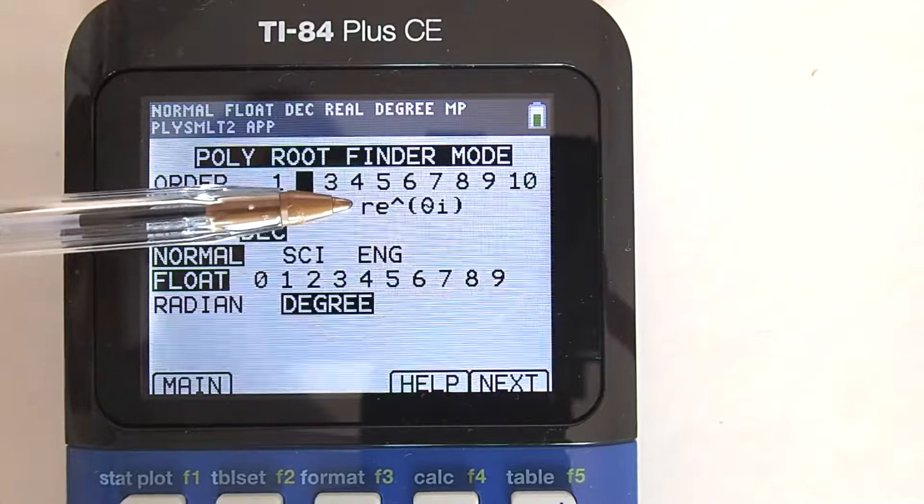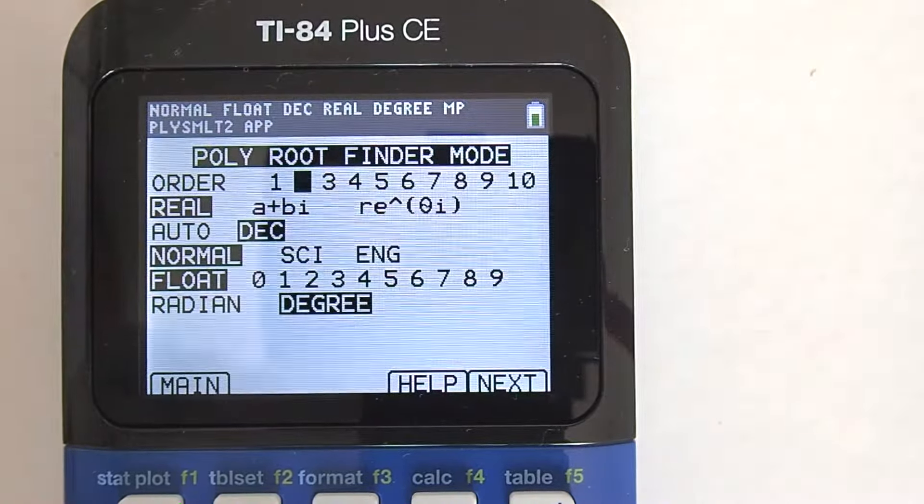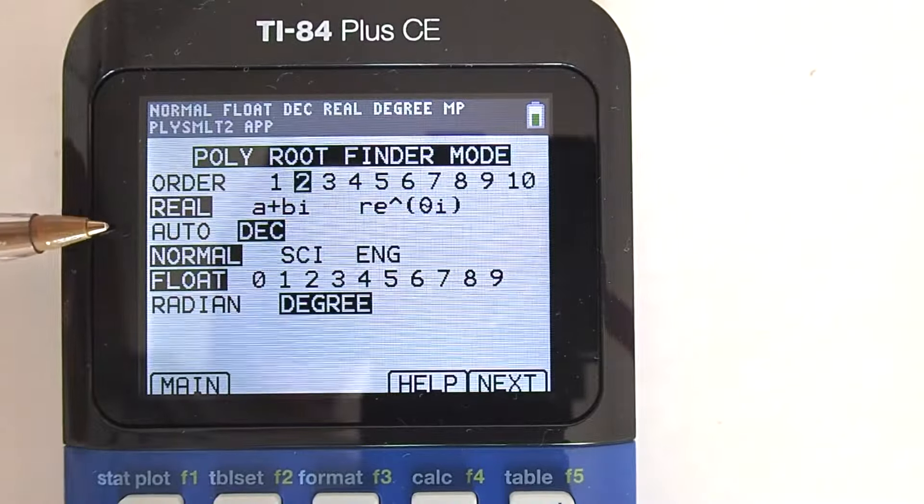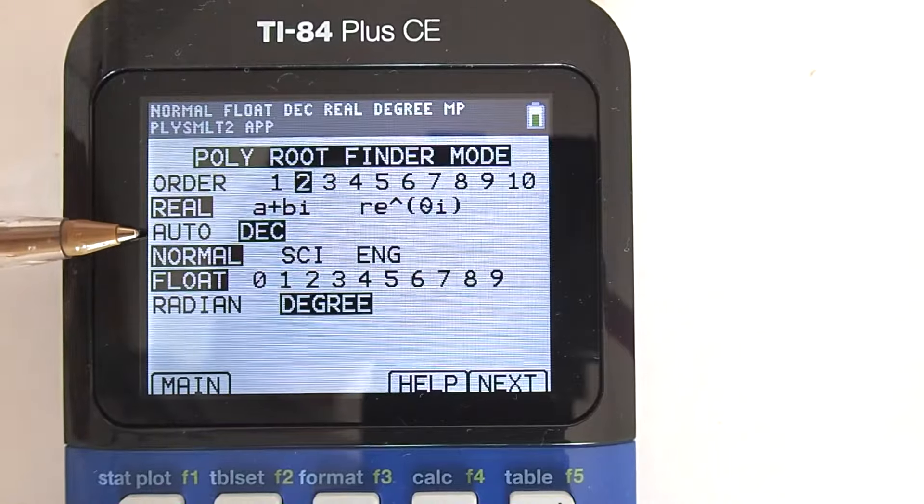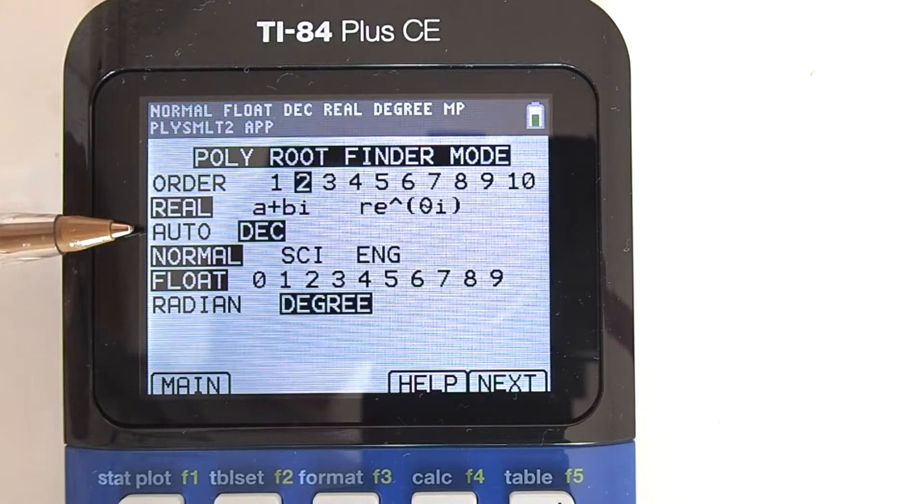To the right of the complex number symbol is RE caret theta i. This is the exponential form of complex numbers. The next line down is auto and decimal, DEC. The auto mode should determine to give the answer in a fraction or decimal. The DEC will give the answer in a decimal format.